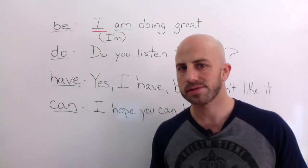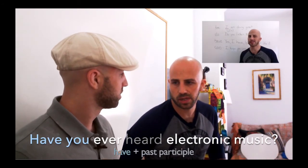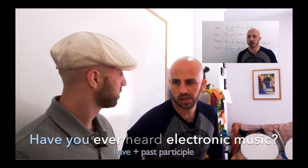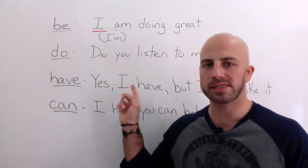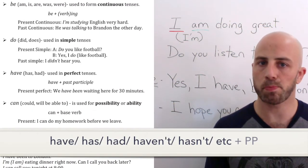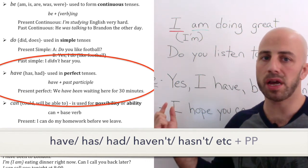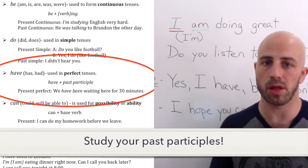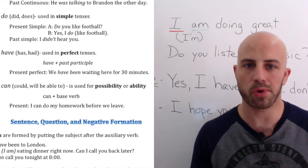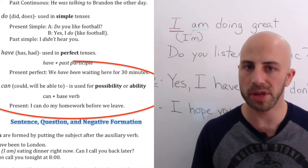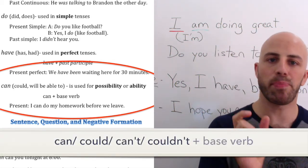Do you remember what the question was? 'Have you ever heard electronic music?' I asked 'have you heard electronic music?' and James answers 'yes, I have.' 'Have' is used to form our perfect tenses — so we'll have 'have' plus the past participle of the verb. And finally, 'can' is used to express possibility or ability.